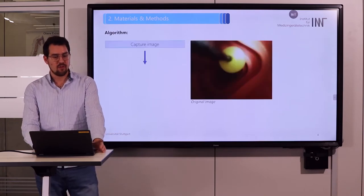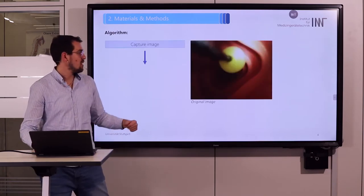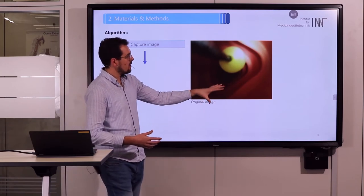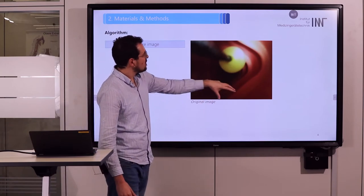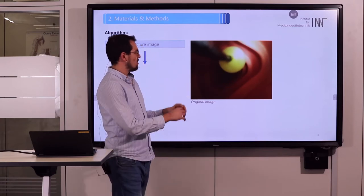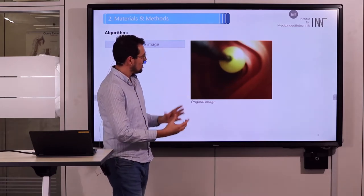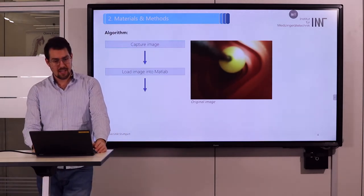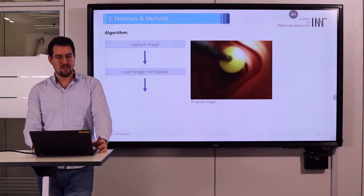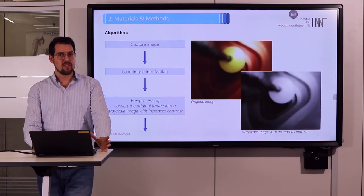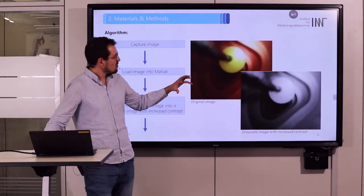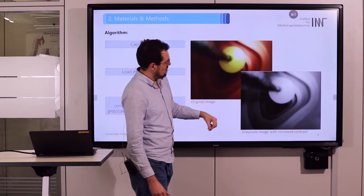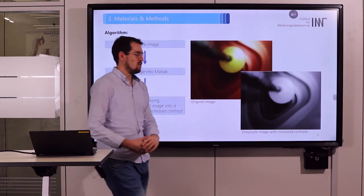For the algorithm, first we capture an image. In our colon model, you see the intestine and in front of us the big yellow sphere which is our balloon. We load this image into MATLAB and perform pre-processing where the original image is converted to grayscale with increased contrast.